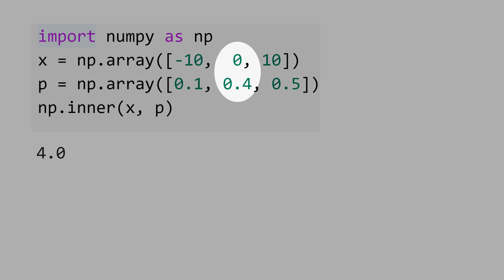because 0 times 0.4 is 0. Now, let's calculate the inner product of vector p times x. You just switch the order, and you get 4 as well.